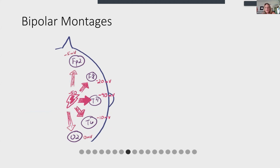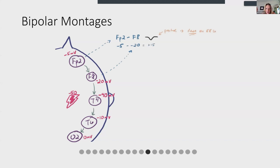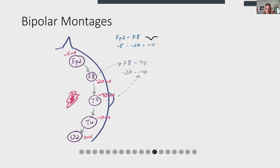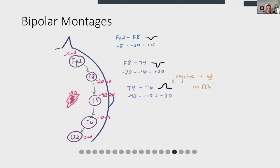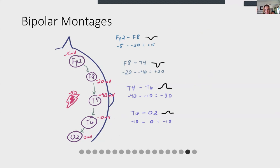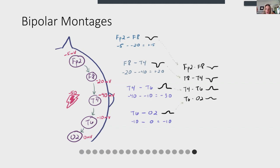In a bipolar montage we subtract the reference from the active. If there's a source of slow — say a negative 50 microvolt charge — it might be picked up as negative 40 at T4, negative 20 at F8, negative 10 at T6, zero at O2, and negative 5 at FP2. The way an electrical focus propagates through the brain creates a characteristic phase reversal in the EEG, demonstrating the usefulness of a bipolar montage for sourcing.